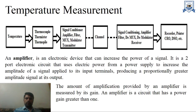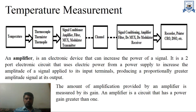The next step is signal conditioning at the receiving end. It contains amplifier filters, demultiplexers, demodulators, etc. Next are our recorders, printers, CROs, digital storage oscilloscopes, etc.